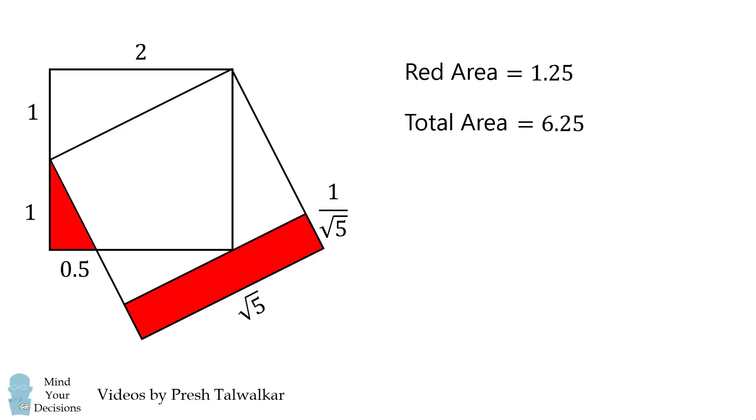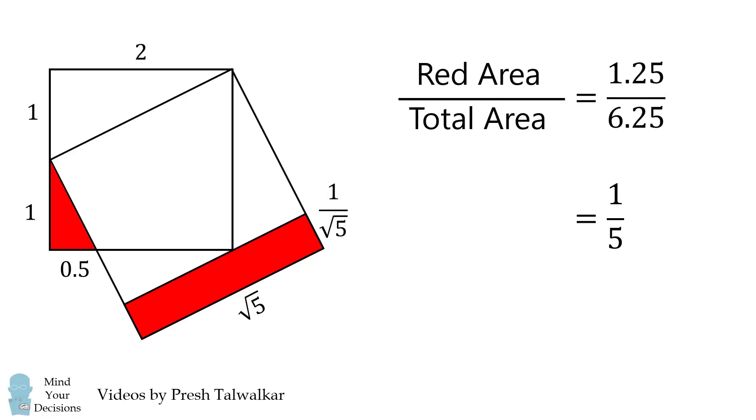We now take the area of the red shapes divided by the total area, and we get 1.25 divided by 6.25. And that simplifies to be 1 over 5.